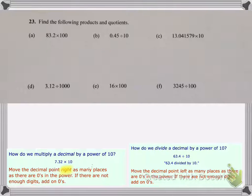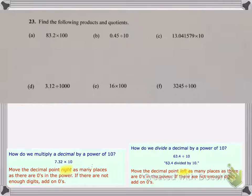Now let's look at the rule for dividing. If we're dividing by a power of 10 we move the decimal point to the left as many places as there are zeros in the power. If there's not enough digits we add on zeros. So we're going to use these two rules for parts a through f.